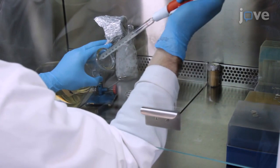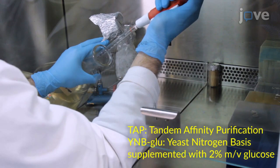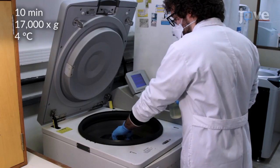For yeast total extract preparation, grow the yeast cells expressing one of the splicing factors fused to the TAP tag in one liter of YNB glucose medium supplemented with the appropriate amino acids or nucleic bases.